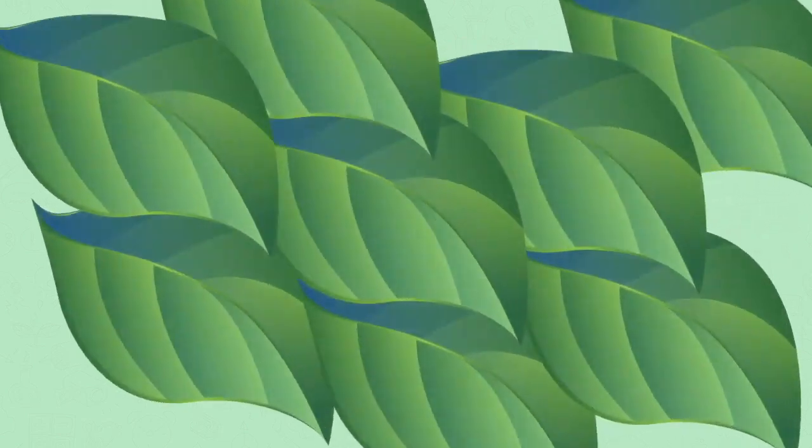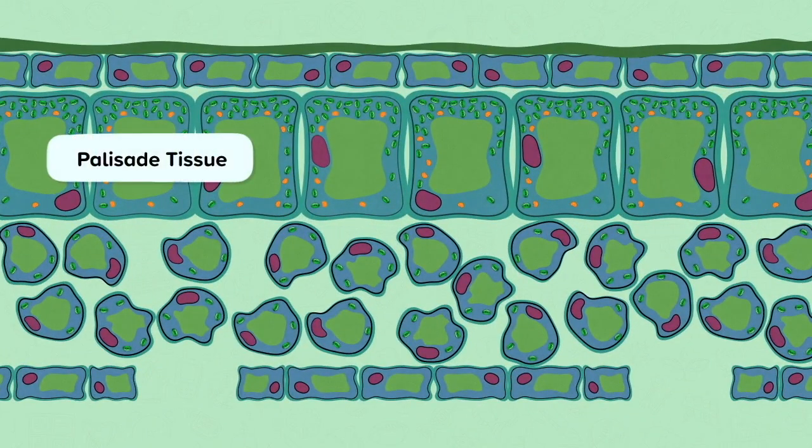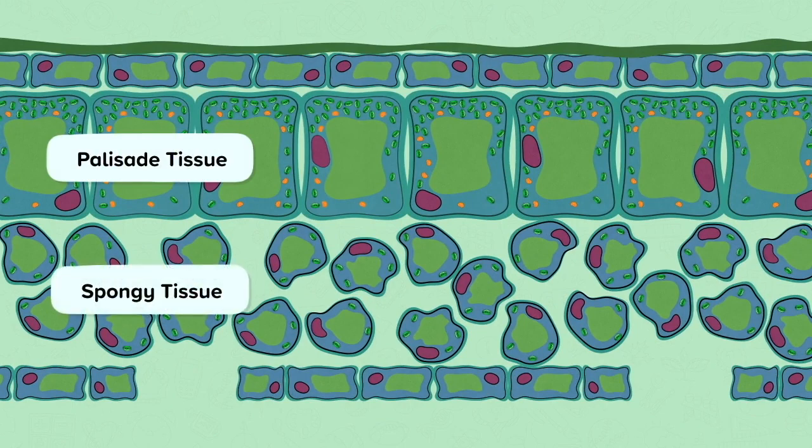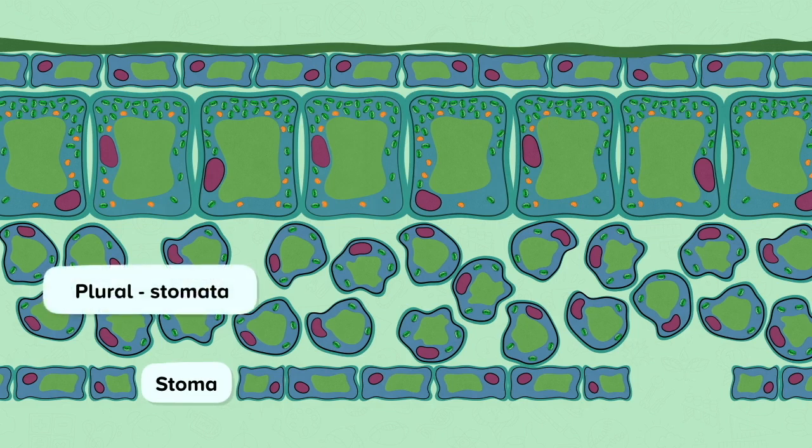This is the structure of the inside of a leaf. The palisade tissue is specialized to collect sunlight, complete photosynthesis and produce glucose. The spongy tissue is specialized to allow gases to move between the outside of the leaf and the photosynthesizing palisade tissue. The gases are exchanged through holes in the bottom of the leaf called stomata. On either side of the holes are guard cells. They are responsible for opening and closing the stomata.